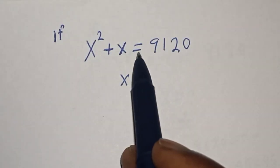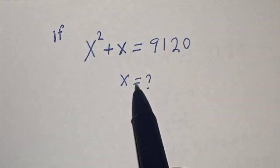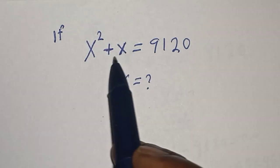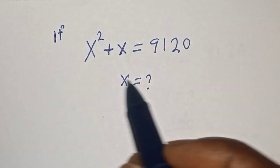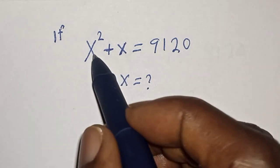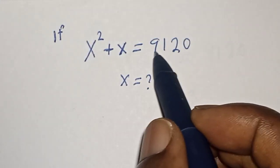If x squared plus x is equal to 9,120, what is the value of x? Hello, welcome to Magis. In this class we want to find the value of x from this equation: x squared plus x is equal to 9,120. Like, share, comment and subscribe.